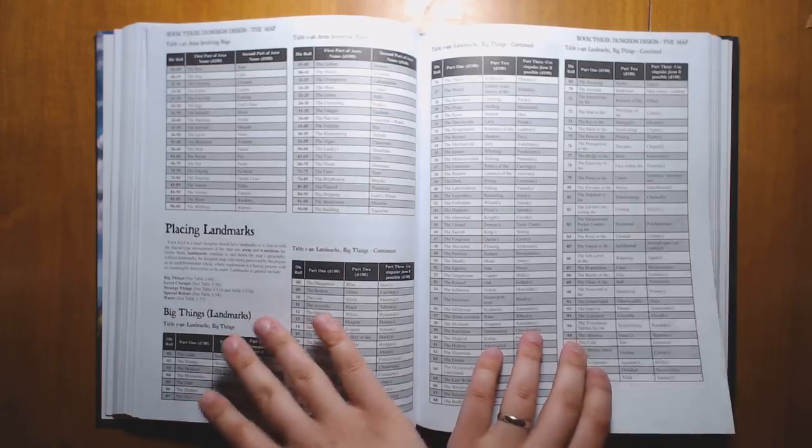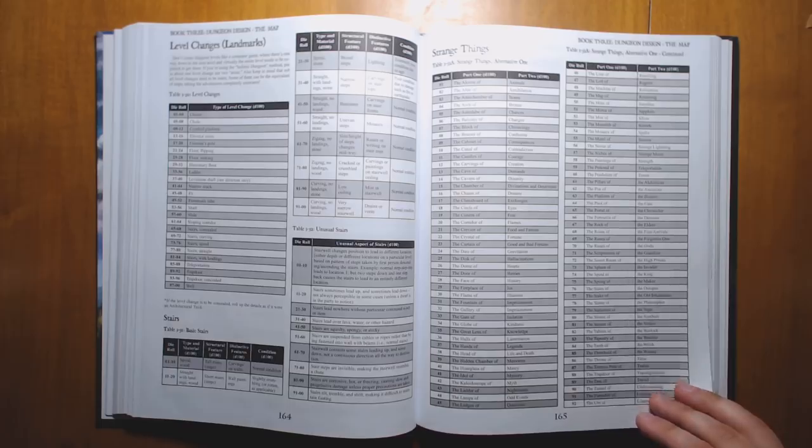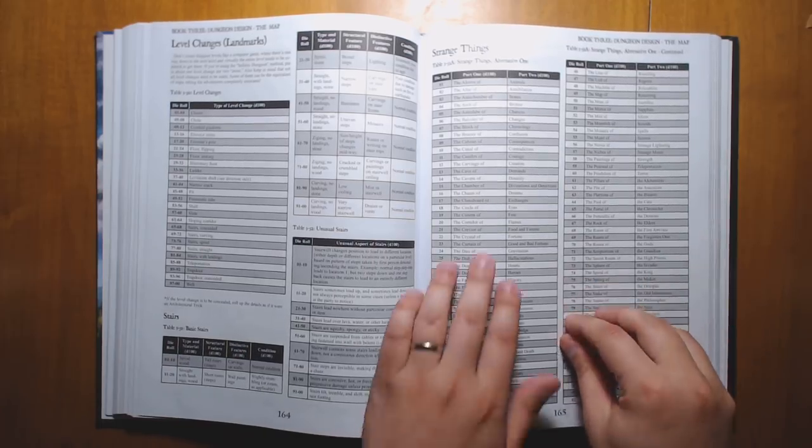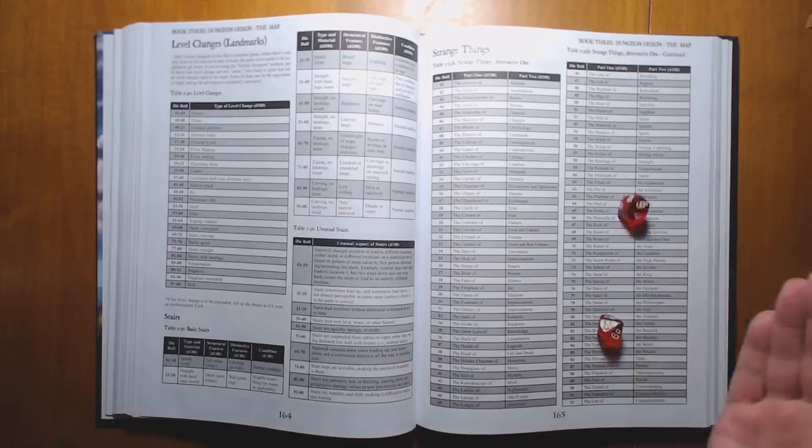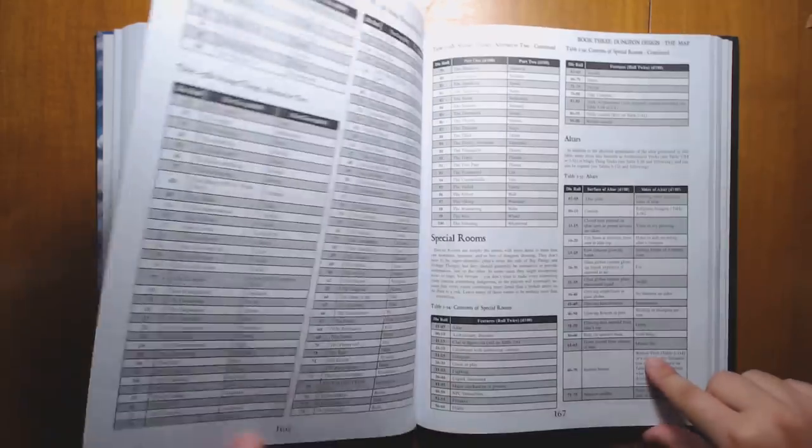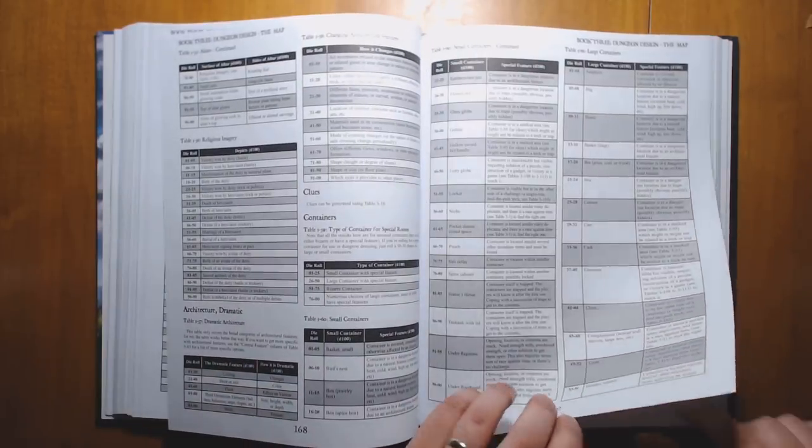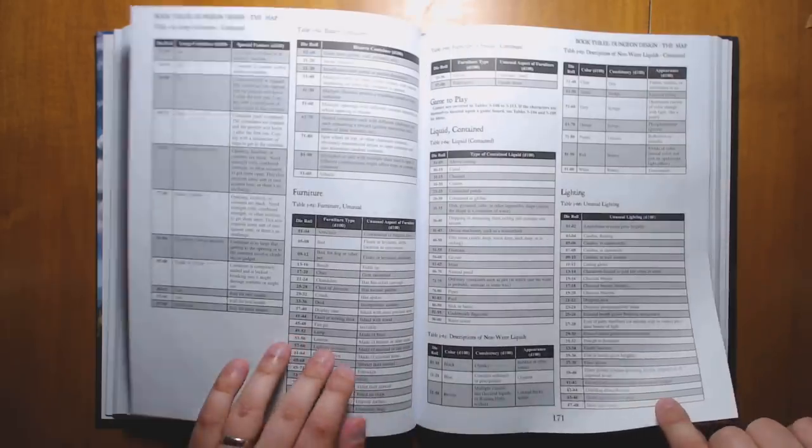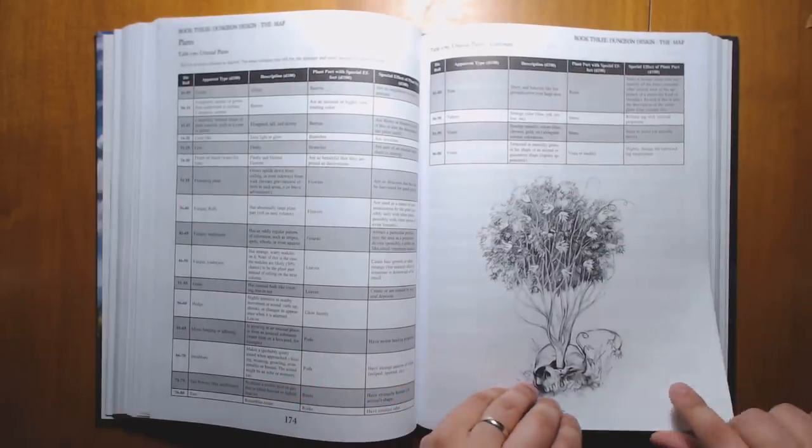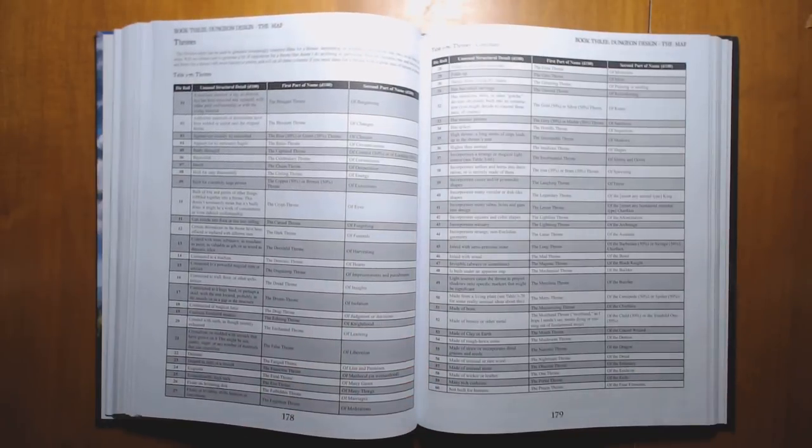Different types of areas. Big landmarks. So we have large landmarks, level changes, strange things that you might find. For example, let's try one here. The Canal of Terror. Or more strange things over here. We have special rooms and altars, dramatic architecture, lighting, liquid, furniture, NPC interactions, weird plants. Just a never-ending trove of stuff to flesh things out.